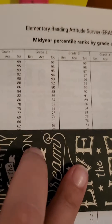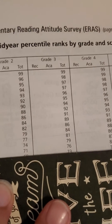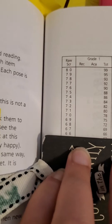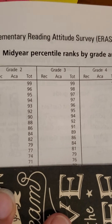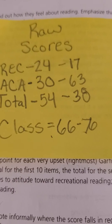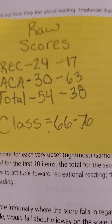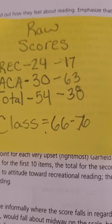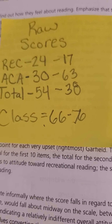So then again you find the 66, follow it over to the appropriate grade level — the result is 76. So as a whole class, your class shows interest in reading on average above 76 percent of their peers in the same grade level.